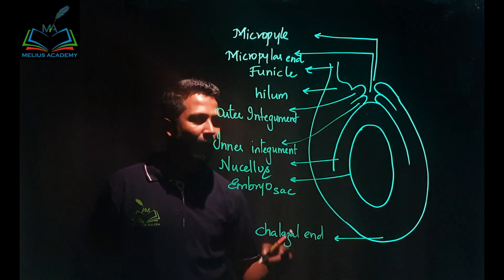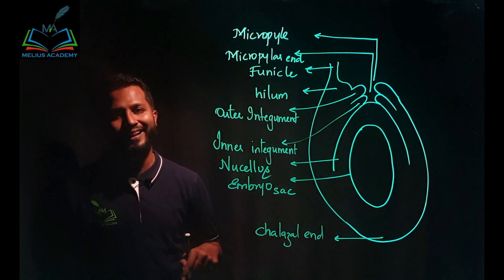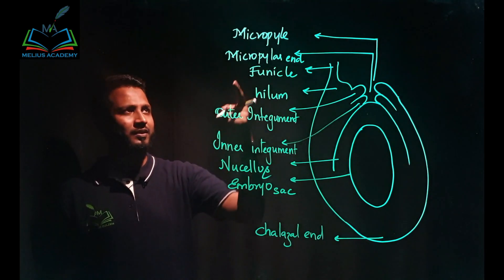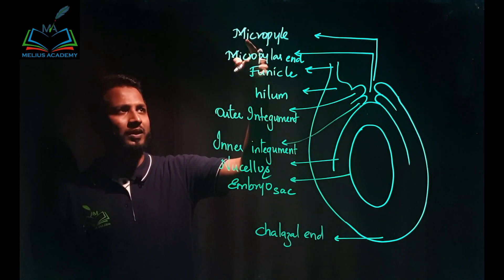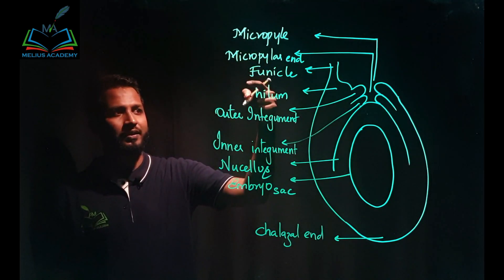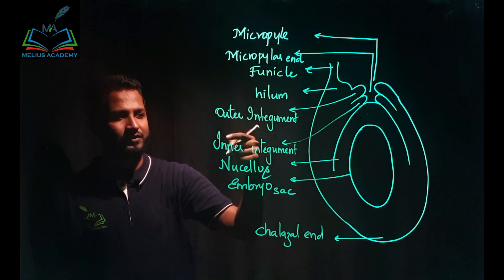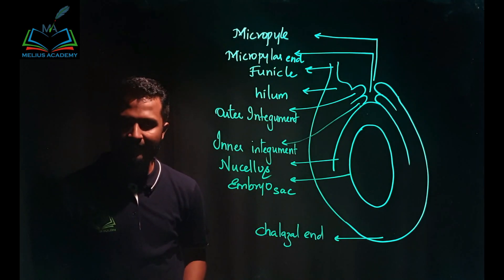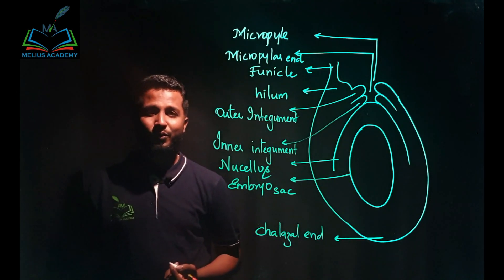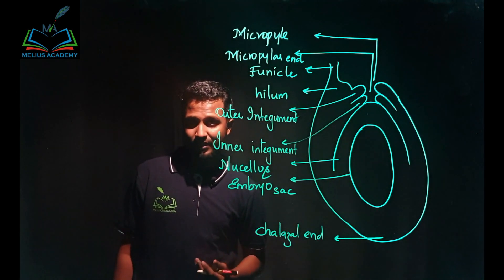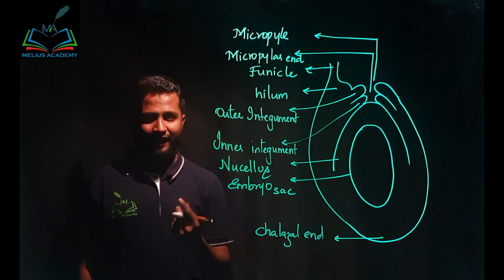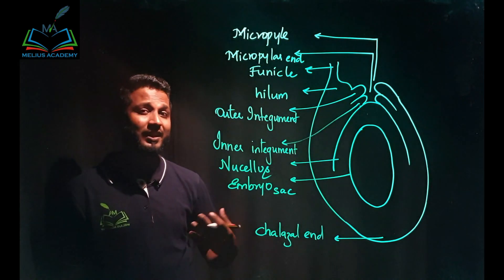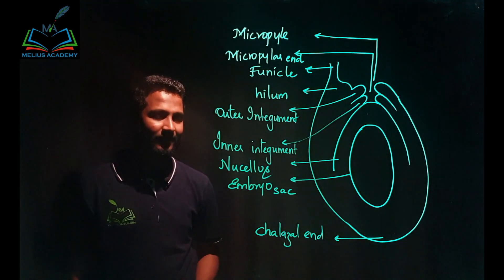If we count totally, there are nine labelings given in the NCERT textbook — one, two, three, four, five, six, seven, eight, nine. But in the pre-university board, half a mark is given for each labeling, so we need a tenth labeling. From where shall we get another one?